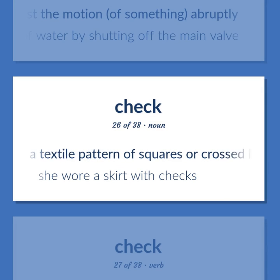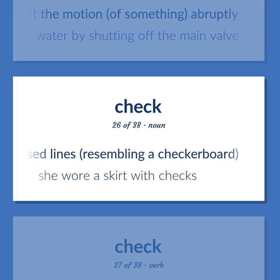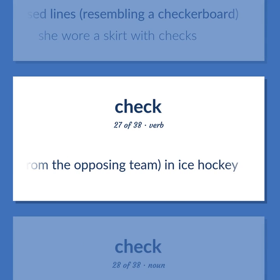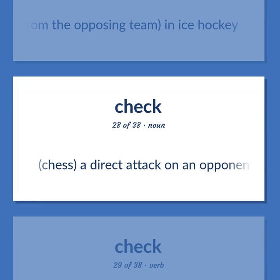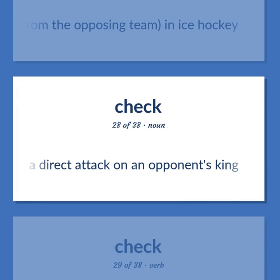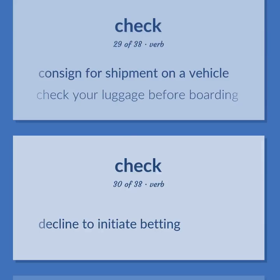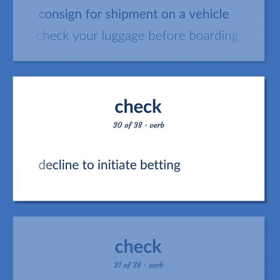A textile pattern of squares or crossed lines, resembling a checkerboard. She wore a skirt with checks. Block or impede a player from the opposing team, in ice hockey. Chess: a direct attack on an opponent's king. Consign for shipment on a vehicle. Check your luggage before boarding. Decline to initiate betting.